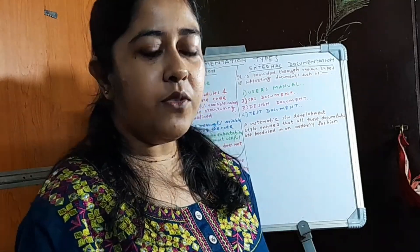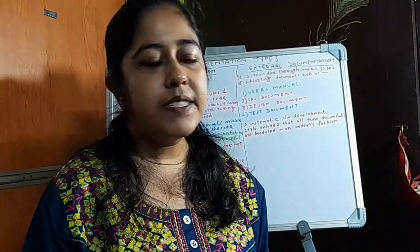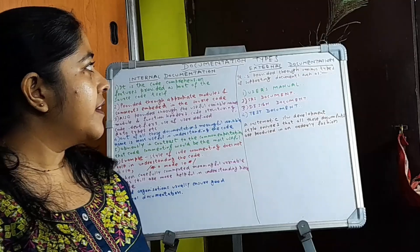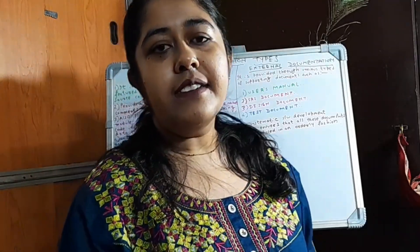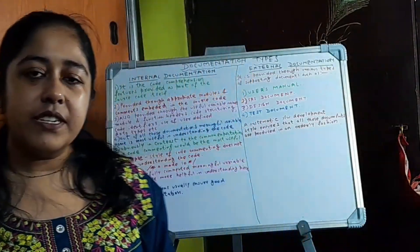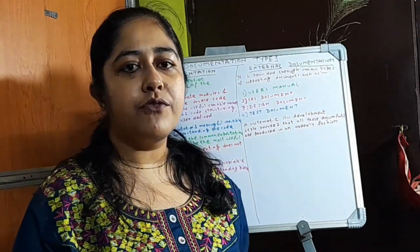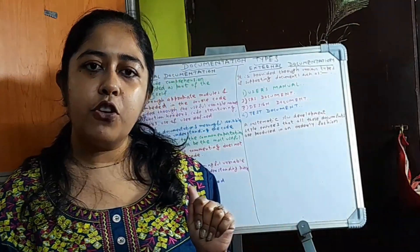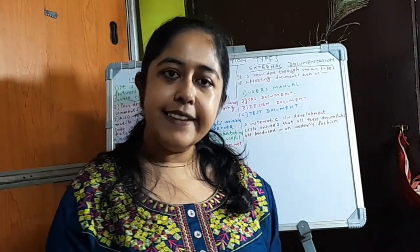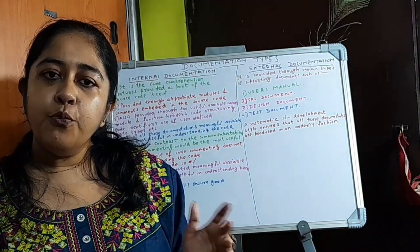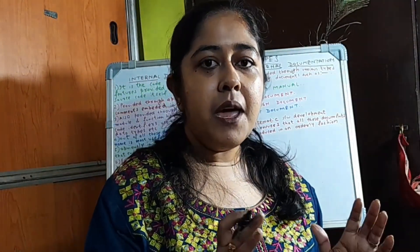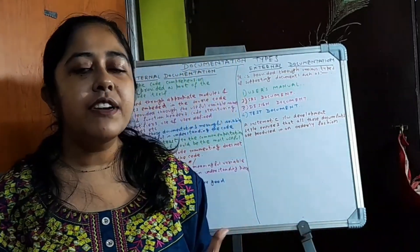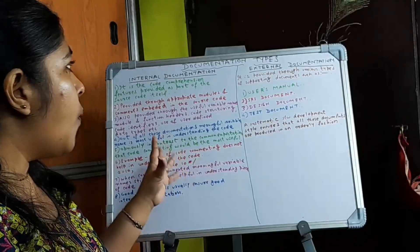In today's class we are going to start another topic. In the previous topic we have seen what is software documentation. Today we will see the types of software documentation. There are two types of software documentation: one is internal software documentation and the second one is external software documentation. Both are parts of software documentation but they have different definitions and work differently.